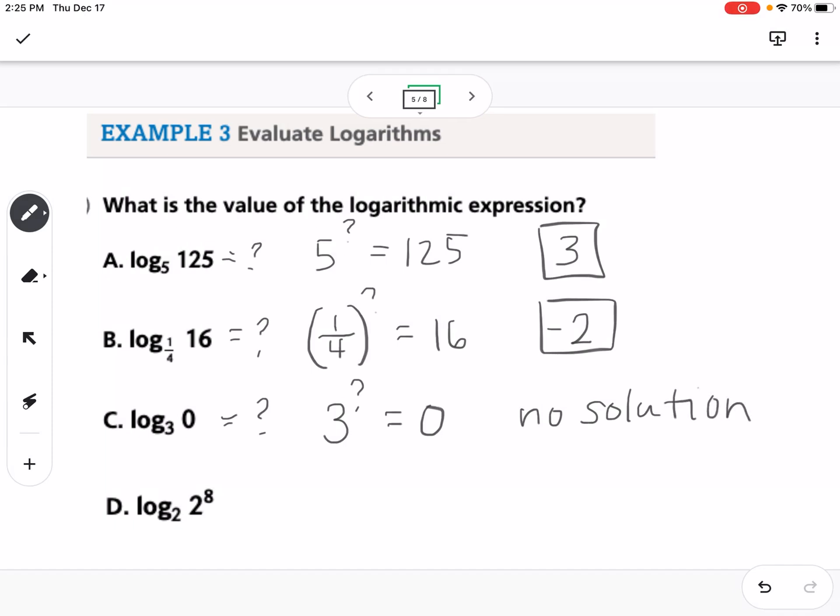Finally, we're going to look at this last one, we have 2 to the what power equals 2 to the 8th power. You can see just by looking at that, the answer would be 8 because they have the same base, so therefore they have to have the same exponent.